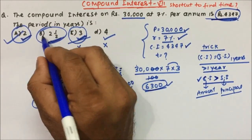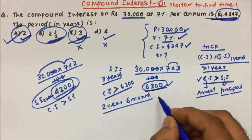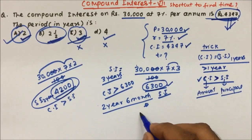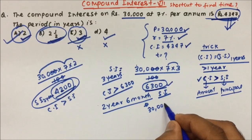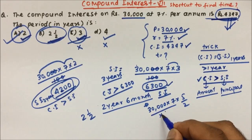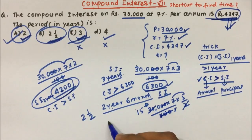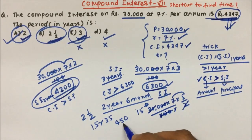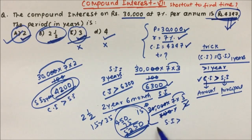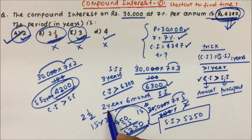To confirm, let's check option B — two and a half years. We calculate simple interest first: if simple interest is already more than 4347, no need to calculate compound interest. Simple interest = 30,000 × 7 × (5/2) ÷ 100. Simplifying: 5 × 7 = 35, and 35 × 15 = 525, giving 5250. For two and a half years, simple interest itself is 5250, which is more than the compound interest of 4347 given in the question. So the answer is confirmed as option A.